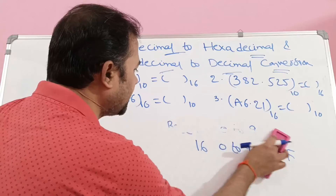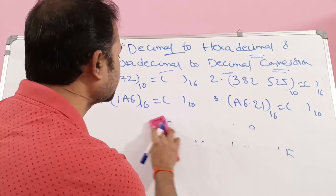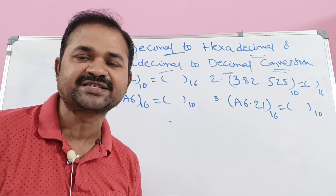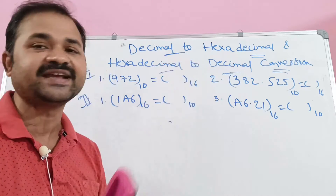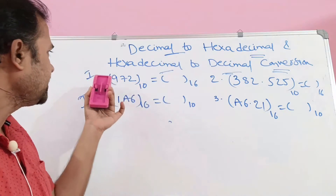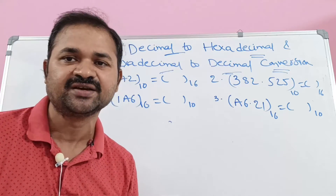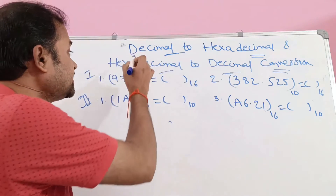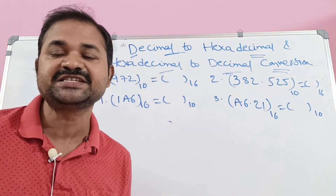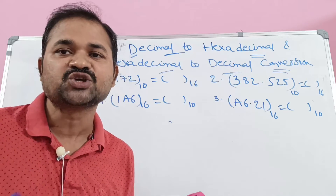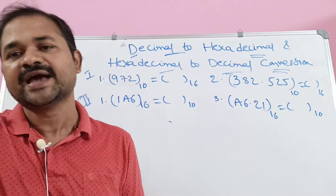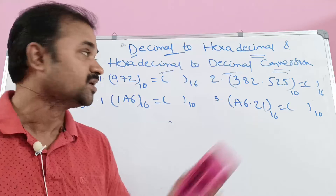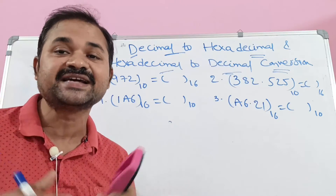Now let us see the conversions. The first one is decimal to hexadecimal conversion. For these two examples we have to construct the equivalent hexadecimal number. If we want to convert decimal to hexadecimal, we have to divide that number by 16, because the destination number system is hexadecimal.